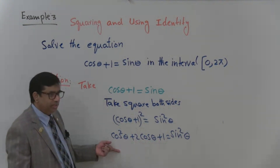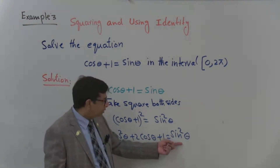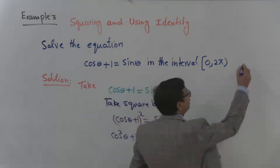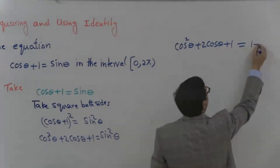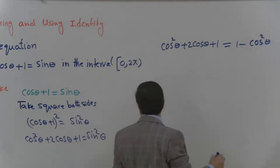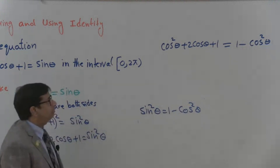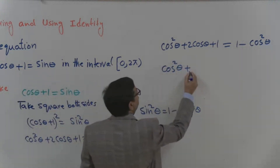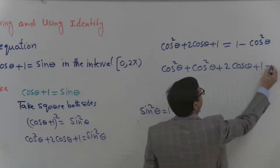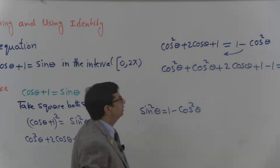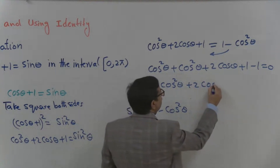We need one function here, either sine or cosine. Since two cosines are already present, we write the formula sine squared theta equals 1 minus cosine squared theta. This gives us: cosine squared theta plus 2 cosine theta plus 1 equals 1 minus cosine squared theta. Collecting terms, we have 2 cosine squared theta plus 2 cosine theta equals 0.